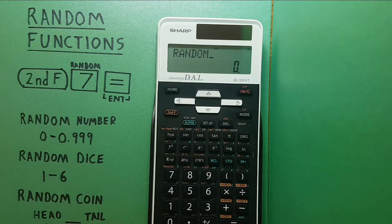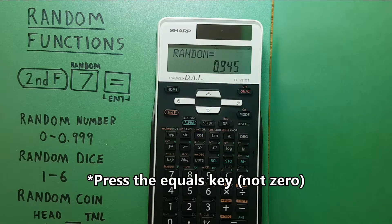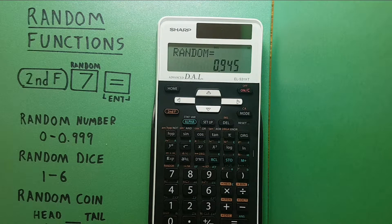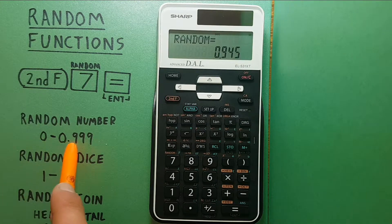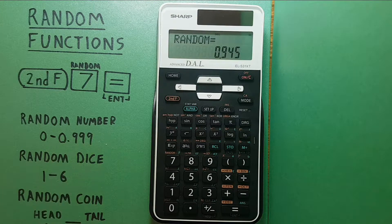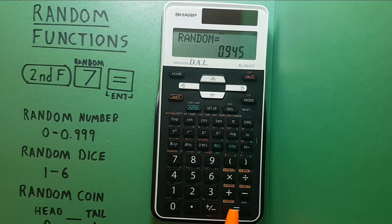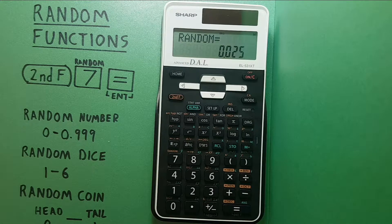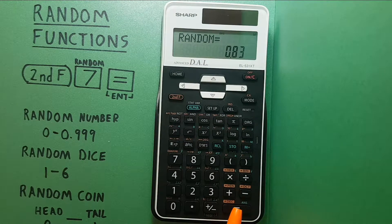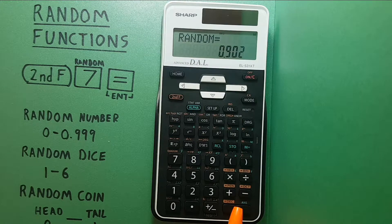If we want to use it we press zero again. We get point nine four five on this example which we know is between our zero and zero point nine nine nine. We can use it again. This time we got zero point zero two five and we can keep going continuously getting random numbers between zero and point nine nine nine.